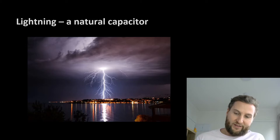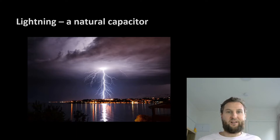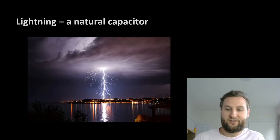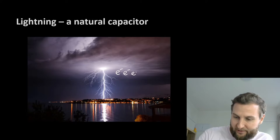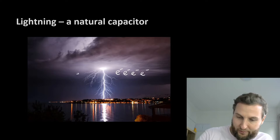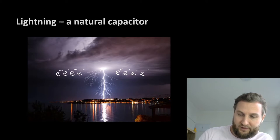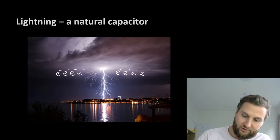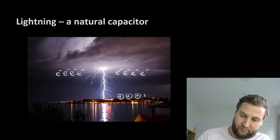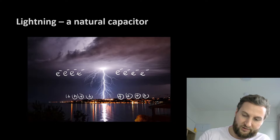Inside the clouds, we're going to have stray electrons that occur during the storm activity, and lots of electrons build up in the clouds. These electrons are going to attract positive charges in the ground or at tall objects nearby.